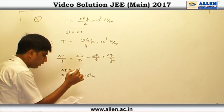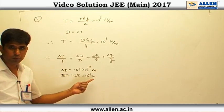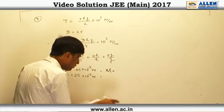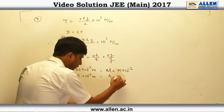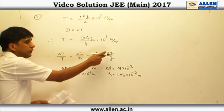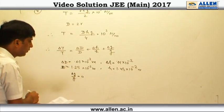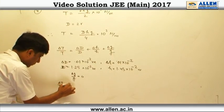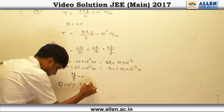To get the percentage error in surface tension, we use delta T by T equals delta D by D plus delta H by H plus delta G by G. The value of delta D is 0.01 into 10 to the power minus 2 meter, D is 1.25 into 10 to the power minus 2 meter. Delta H is 0.01 into 10 to the power minus 2 meter, H is 1.45 into 10 to the power minus 2 meter. Since G is given, delta G by G equals 0. Putting these values in, the percentage error delta T by T into 100 is approximately 1.5 percent.